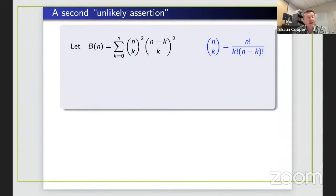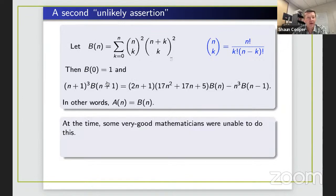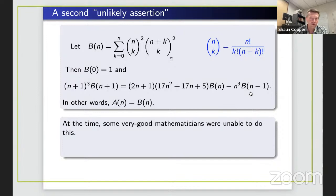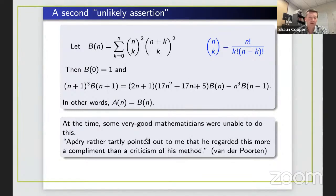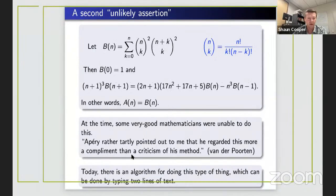A second unlikely assertion: if we define bₙ by a binomial sum, then the bₙ's satisfy the same recurrence relation as the Apéry numbers. It's an interesting exercise to try showing this — unless you use clever tricks now called creative telescoping, it is very hard to verify. At the time of the conference some very good mathematicians couldn't do it. Today there's an algorithm you can run on a computer with two lines of text.